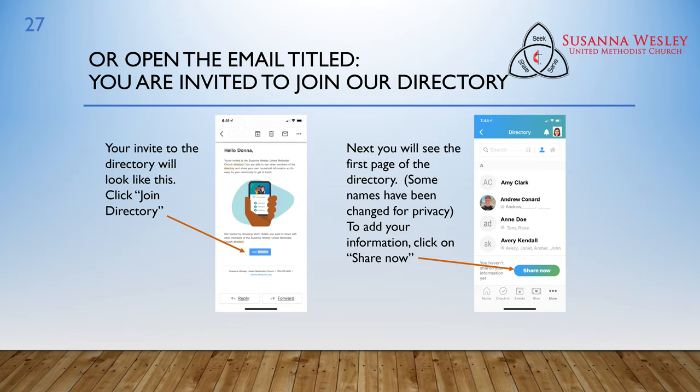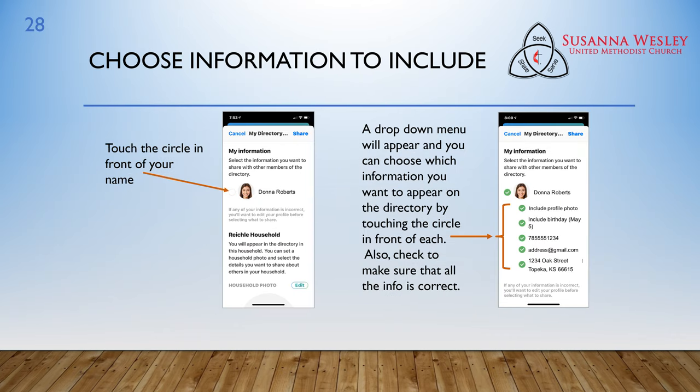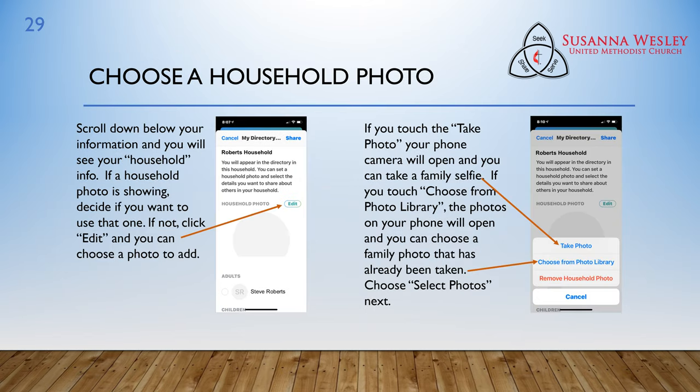The next page, you will see the first page of the directory. Some of the names have been changed for privacy. To add your information, click on Share Now. Next, you will be able to choose which information you want to include in the directory. The first step is to touch the circle in front of your name and picture. A drop-down menu will appear and you can choose which information you want to appear on the directory by touching the circle in front of each. Also, check to make sure that all the info is correct. Scroll down below your own information and you'll see your household info. If a household photo is already showing, decide if you want to use that one or leave it. If you don't, click Edit and you can choose a photo to add.